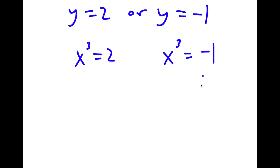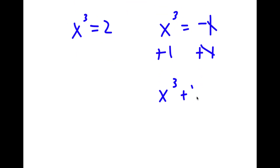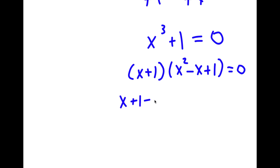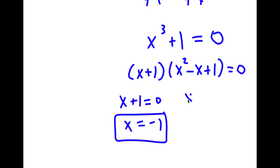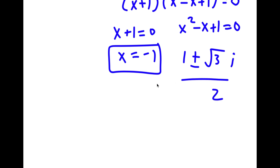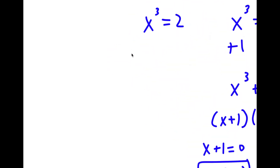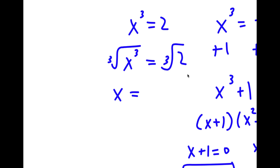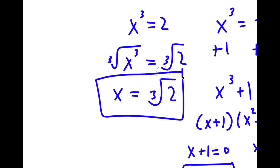For x cubed equals negative 1, adding 1 to both sides gives x cubed plus 1 equals 0, which factors as (x plus 1)(x squared minus x plus 1) equals 0. This gives x equals negative 1 as one solution, and using the quadratic formula on x squared minus x plus 1 equals 0 gives x equals 1 plus or minus the square root of 3i all over 2. For x cubed equals 2, taking the cube root of both sides gives x equals the cube root of 2.